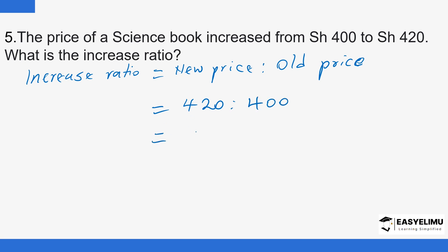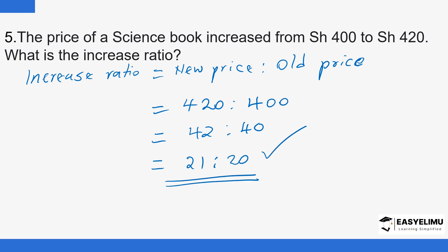First divide by 10: 420 divided by 10 is 42, and 400 divided by 10 is 40. Each of them is still divisible by 2, so we have 21 is to 20. This is the increase ratio. You can see 21 is greater compared to 20. So this again is an increasing ratio, and now you should have a good idea of what an increasing ratio is all about.